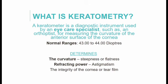Keratometry is the measurement of the anterior corneal curvature, and also determines the power of the cornea. Differences in power across the cornea in both the horizontal and vertical meridians can result in astigmatism. A keratometer can also examine the integrity of the cornea or tear film.